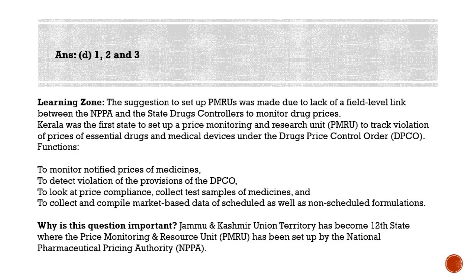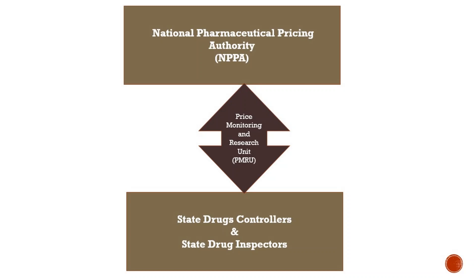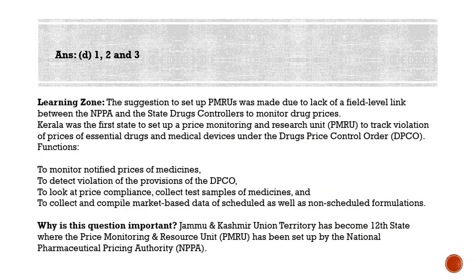The suggestion to set up PMRUs was made due to the lack of a field-level link between NPPA and the state drug controllers and state drug inspectors to monitor drug prices. To bridge this gap, PMRUs were constituted. The state health secretary is the chairman and the drugs controller is the member secretary. Services offered by PMRU include technical help to state drug controllers and NPPA, monitoring notified medicine prices, detecting DPCO violations, checking price compliance, collecting test samples, and compiling market-based data on both scheduled and non-scheduled drugs.